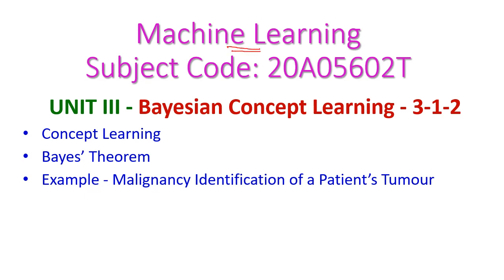In today's Lesson Learning class, we will see the next lesson, that is Unit 3, Part 1, Lesson 2, which is Bayesian Concept Learning. In this class, we will try to understand what is concept learning and then Bayes Theorem. After that, we will see one example for this Bayes Theorem, that is Malignancy Identification of a Patient's Tumor.